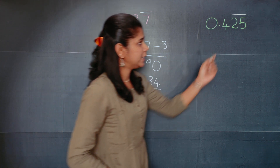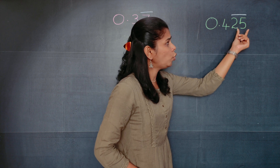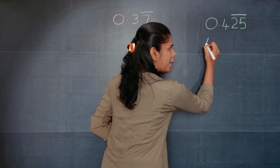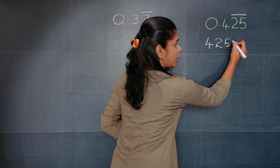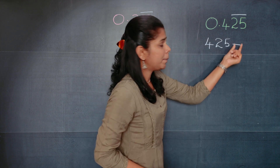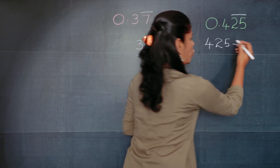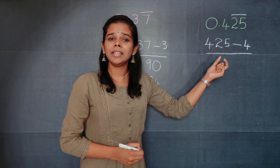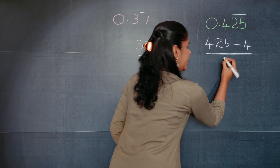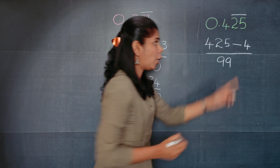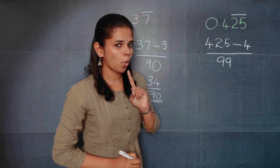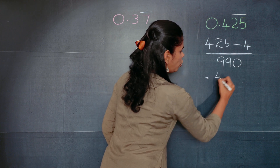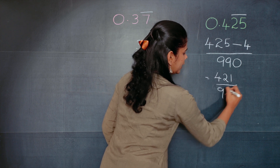In the next question, you can see 0.425 bar — two numbers are under the bar. First write the full number 425, then subtract the number not under the bar, which is 4. So 425 minus 4, divided by: two numbers under the bar gives 99, and one number not under the bar gives a 0, making it 990. So you get 421 divided by 990.